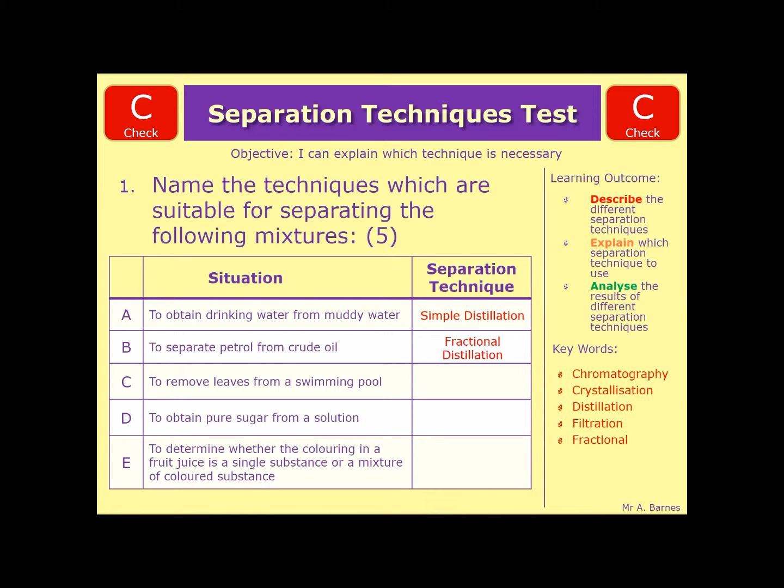If you want to remove leaves from a swimming pool, filtration. To obtain pure sugar from solution, that's crystallization. And finally, to determine whether the colouring in a fruit juice is a single substance or a mixture of coloured substances, that is chromatography.